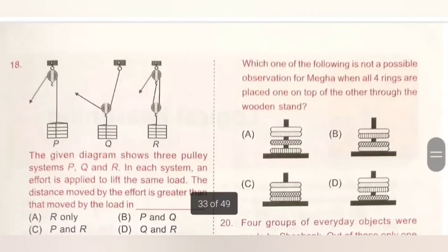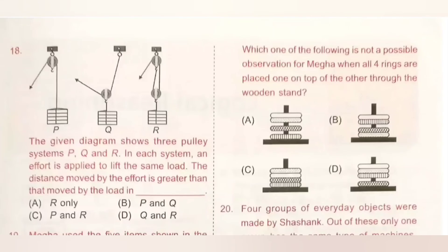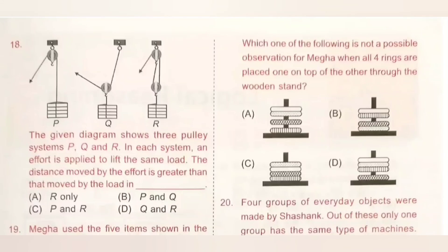Question 18: The given diagram shows three pulley systems P, Q, and R. In each system, an effort is applied to lift the same load. The distance moved by the effort is greater than the distance moved by the load in which system? The correct answer is option A — R only.